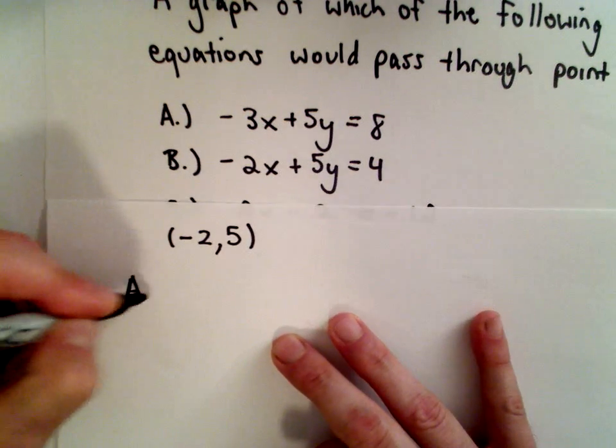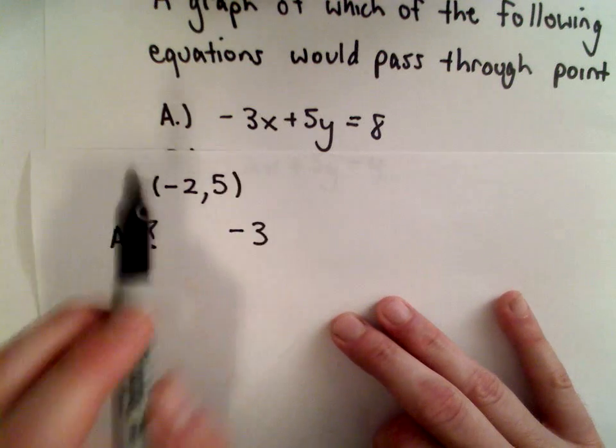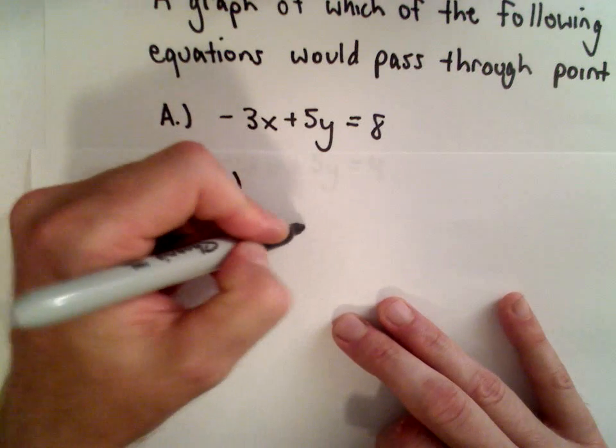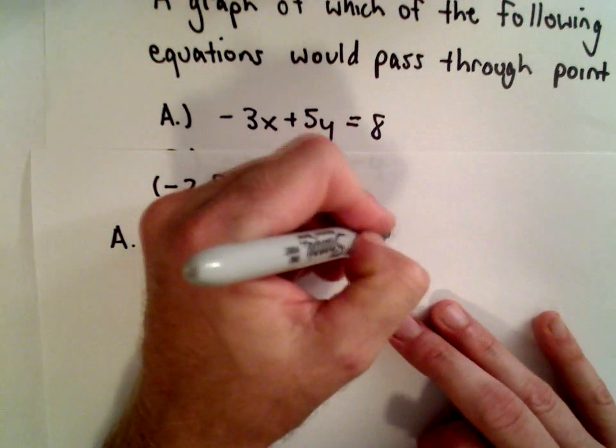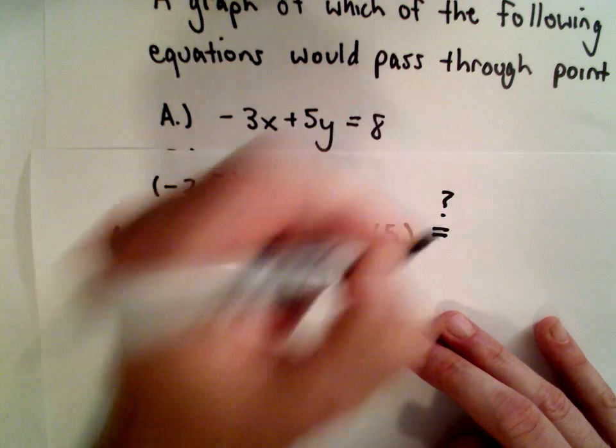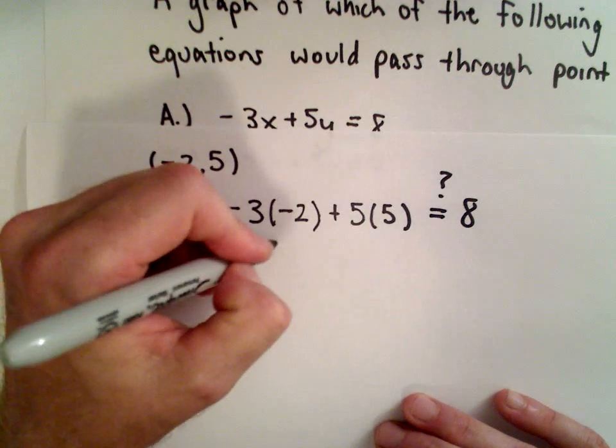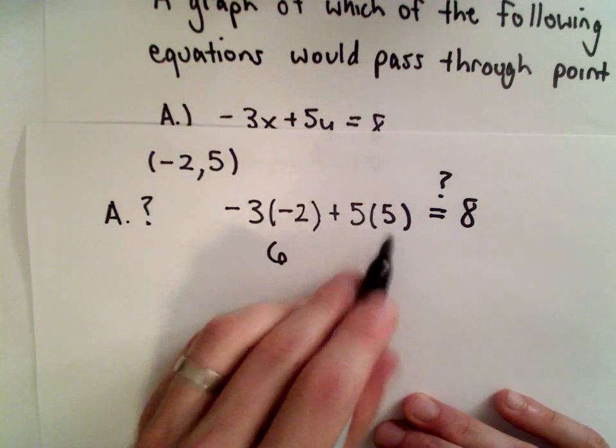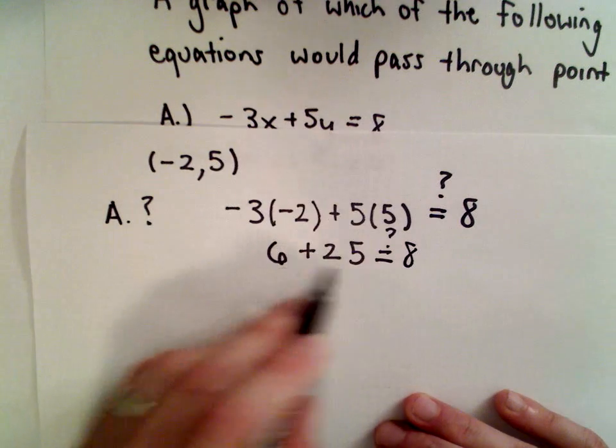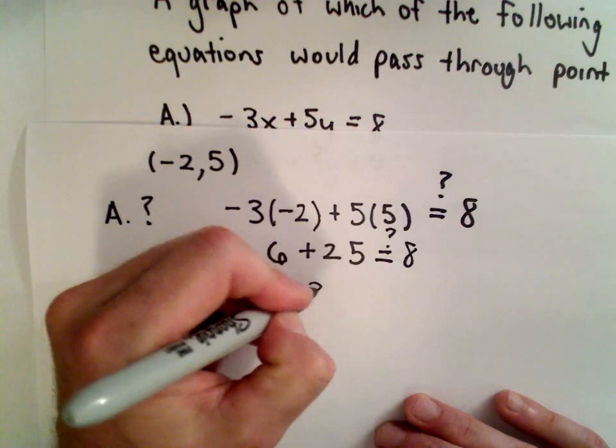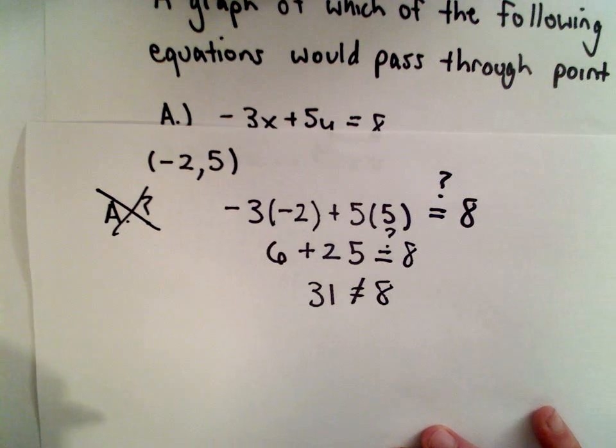Let's see if solution A works. I would have -3 times, for x I'm going to substitute in -2, plus 5 times y, so my y value is positive 5. Does that actually equal positive 8? Well, -3 multiplied by -2 is going to be positive 6. Positive 5 multiplied by positive 5, that's 25. Does 6 plus 25 equal 8? No, definitely not, because we get 31 on the left side and positive 8 on the right side. So solution A is not the correct answer.